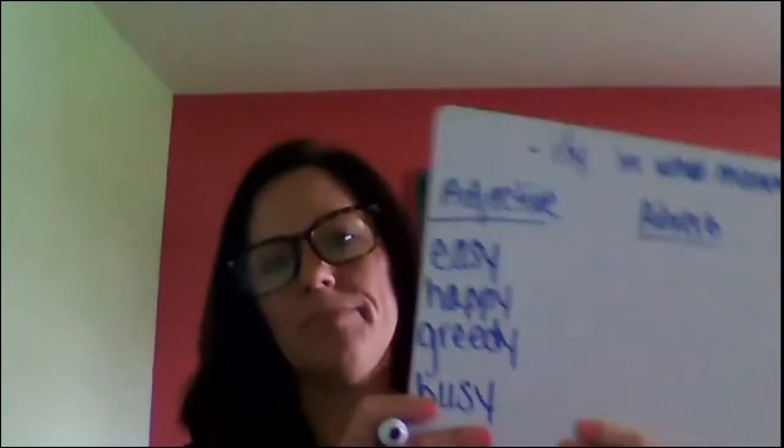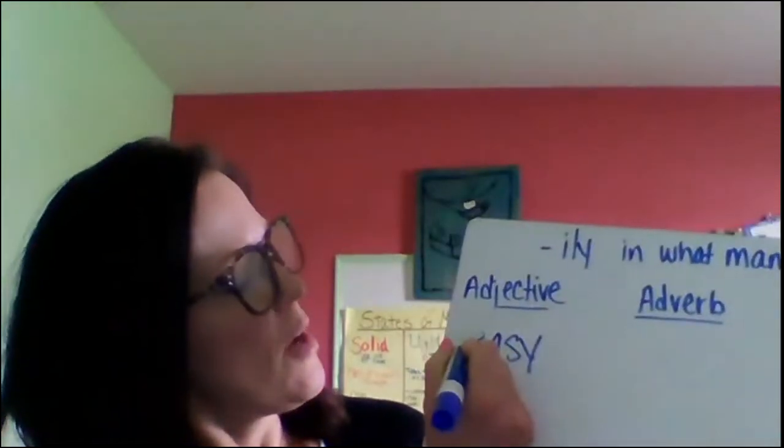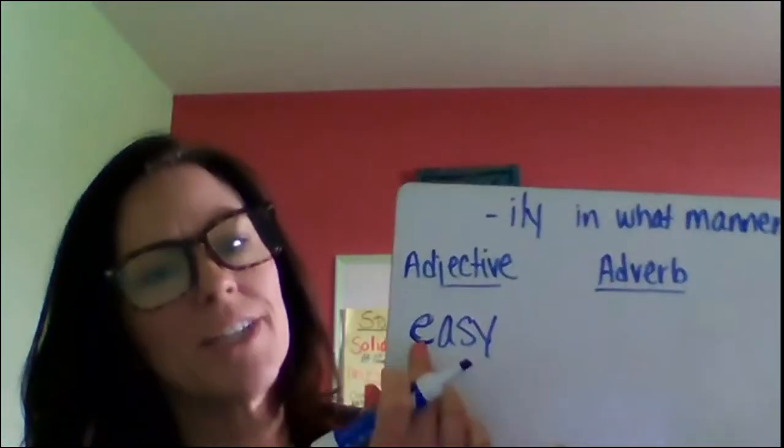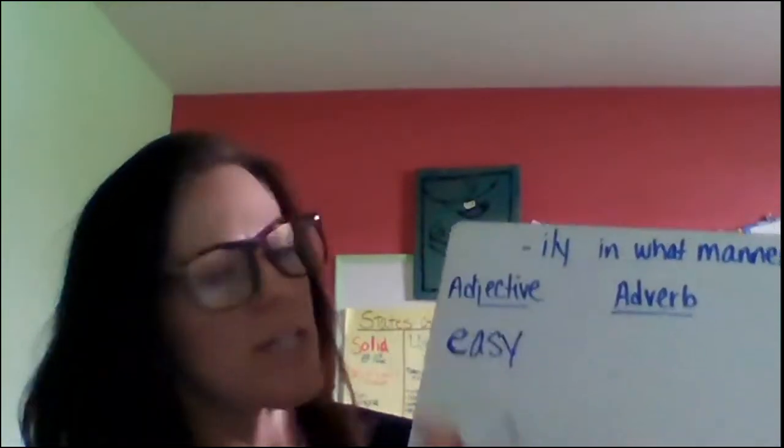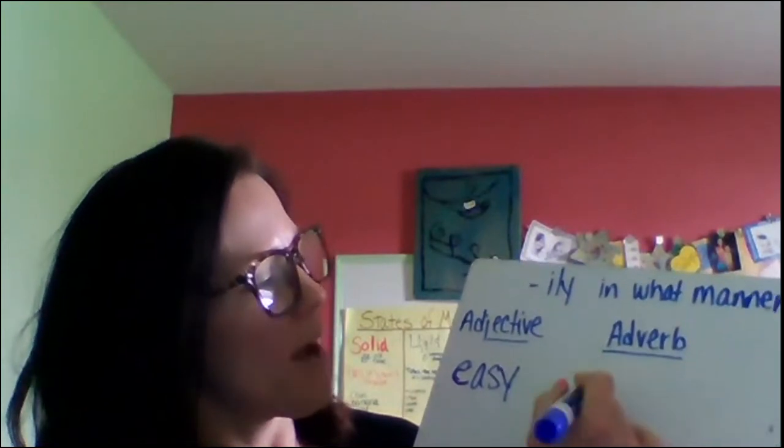So what we're going to do, we're going to take our adjective. So let's take a look at the first one. It's easy. We're going to change this adjective to an adverb by adding the suffix I-L-Y. So now I can read words ending in I-L-Y.